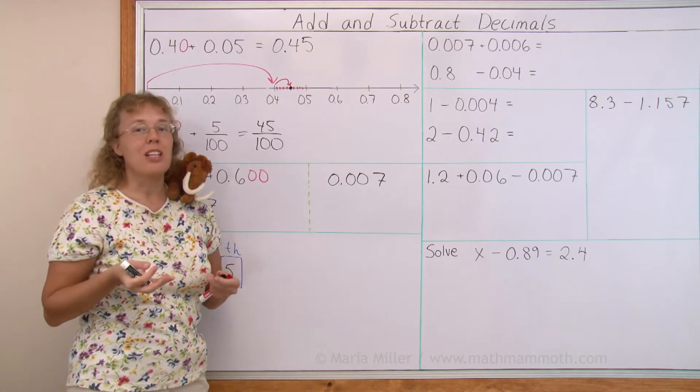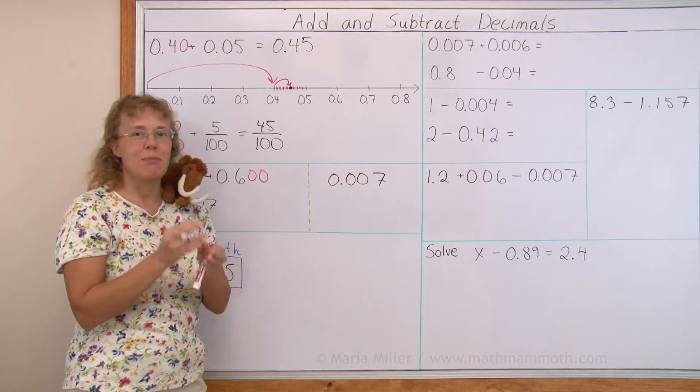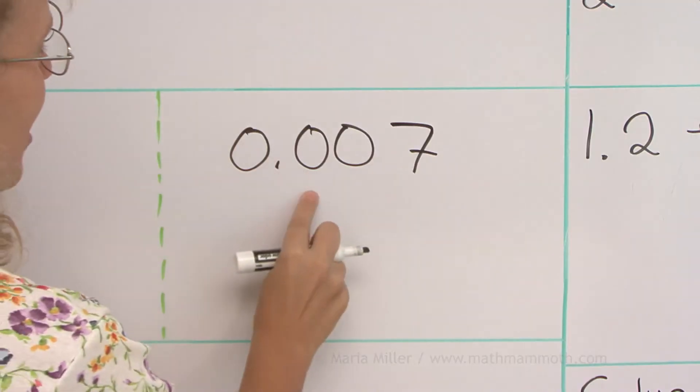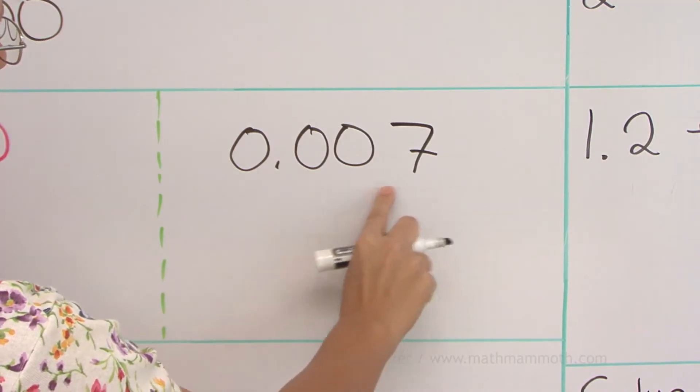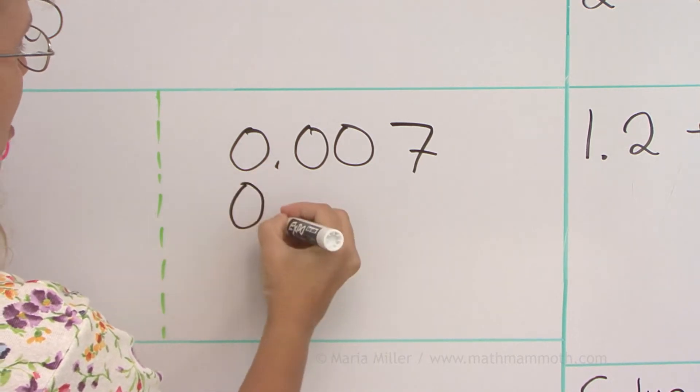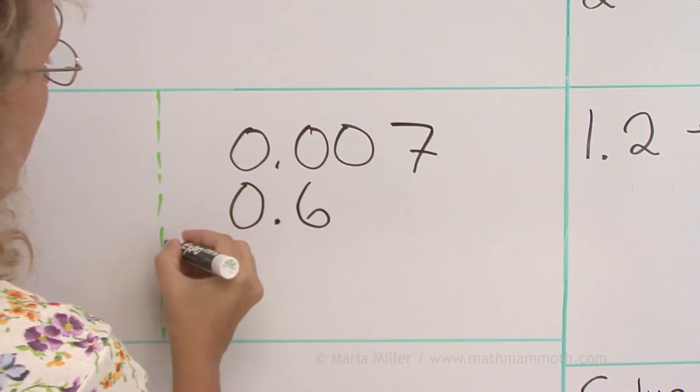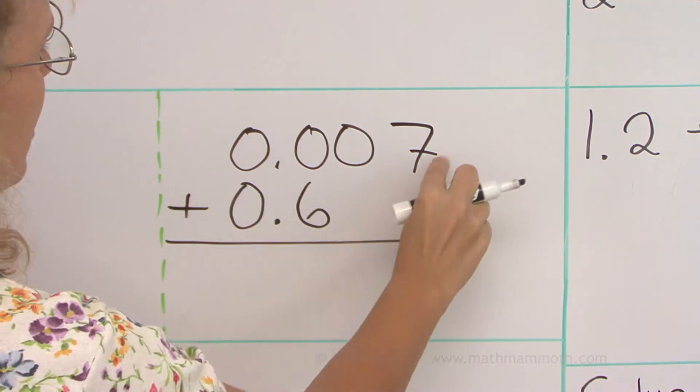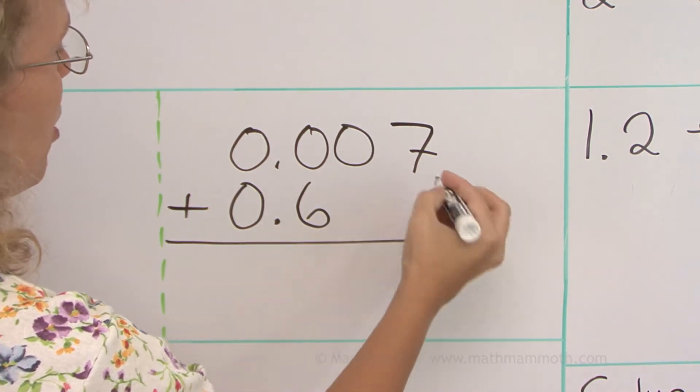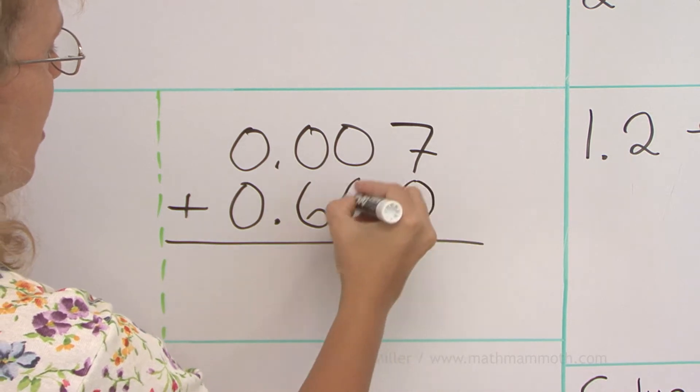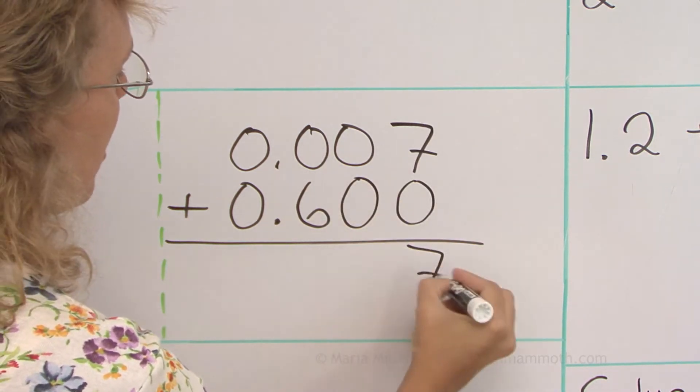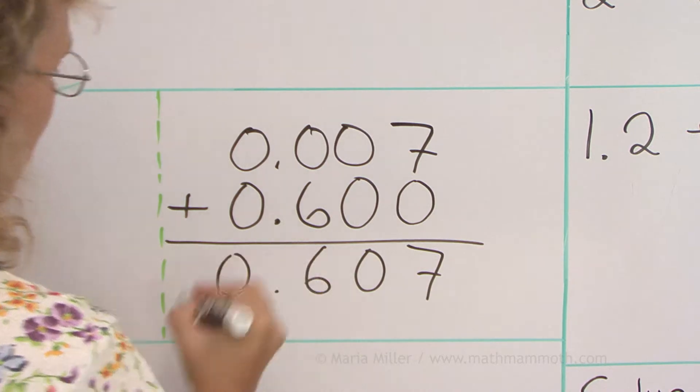Or in other words, I am aligning the different places: the tenths, the ones, the hundredths, the thousandths. 0.6 goes here so that the tenths places are aligned. Now when I add here 7 and nothing, if you want to, you can write a 0 here in these empty places. And I get 7 here, 0, 6, the point, and 0.